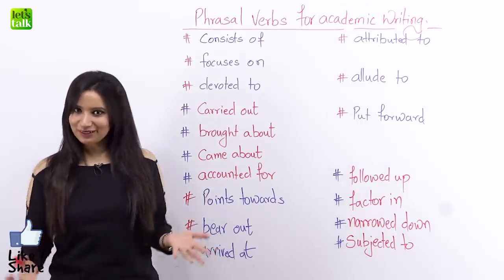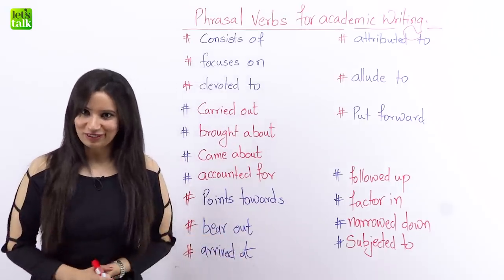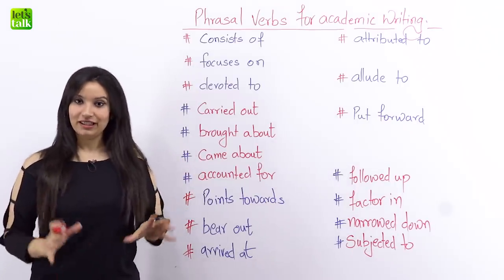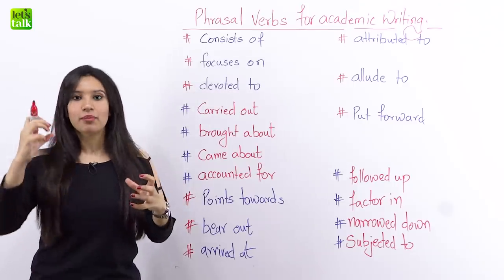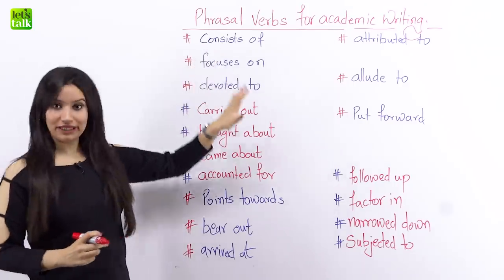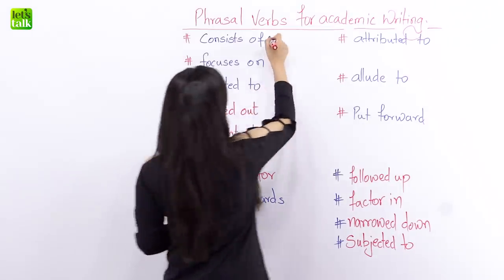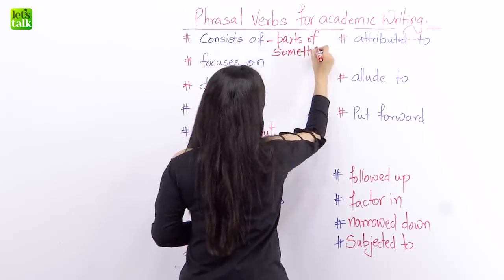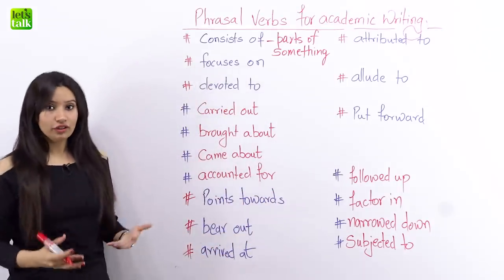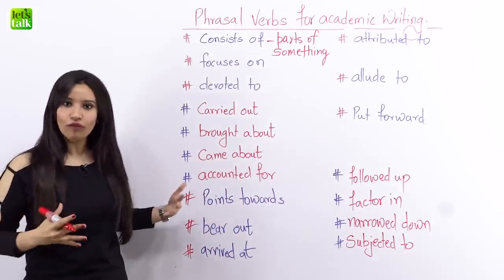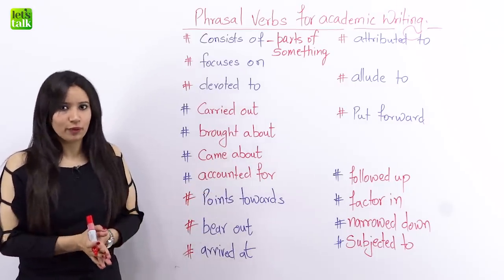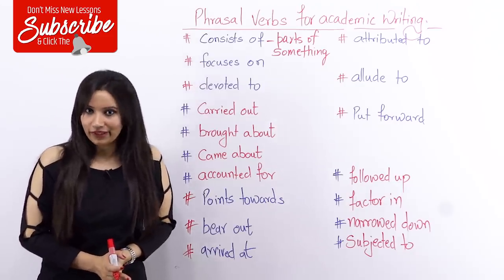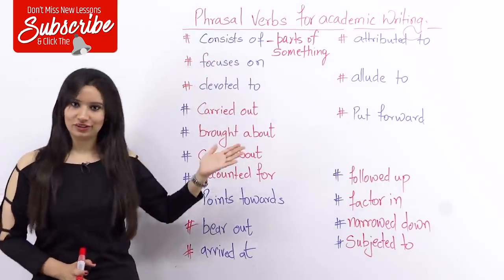Just to remind you, a phrasal verb is a combination of a verb and a preposition. So 'consists of' — anything that consists of something means that it has something, it describes the parts of it. It'll be a great idea to start your report by writing that it consists of three parts or four parts, whatever number of parts your report consists of. Instead of saying 'this report has three parts,' which is pretty boring, you might want to say 'this report consists of three parts.'